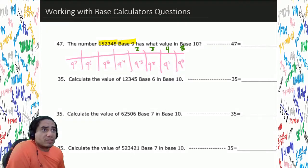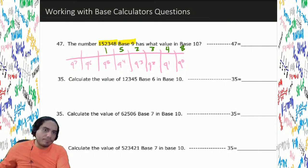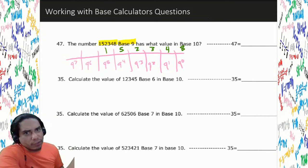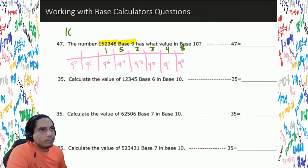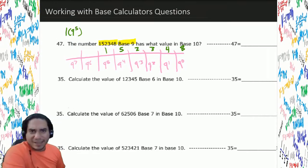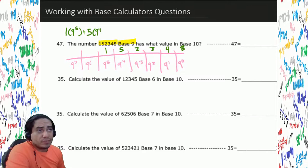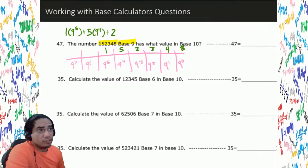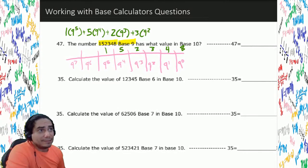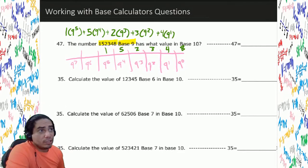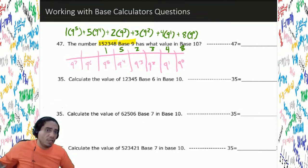To convert, we write the equation: 1 times 9 to the fifth, plus 5 times 9 to the fourth, plus 2 times 9 to the third, plus 3 times 9 to the second, plus 4 times 9 to the first, plus 8 times 9 to the zero. Anything to the zero power is 1.